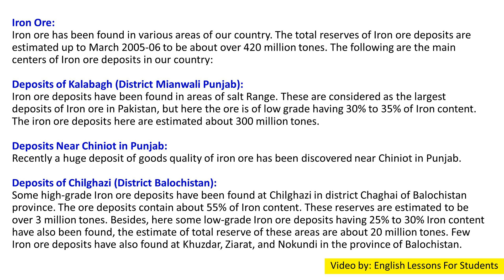Deposits near Chinat in Punjab: Recently a huge deposit of good quality iron ore has been discovered near Chinat in Punjab. Deposits of Chilrazi, District Chagai, Balochistan: Some high-grade iron ore deposits have been found in Chilrazi in district Chagai of Balochistan province. The ore deposits contain about 55% iron content.